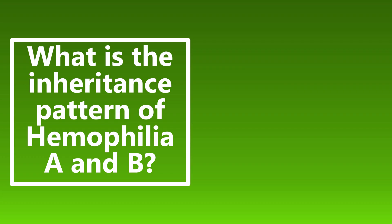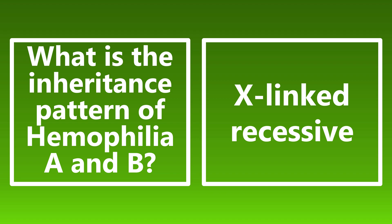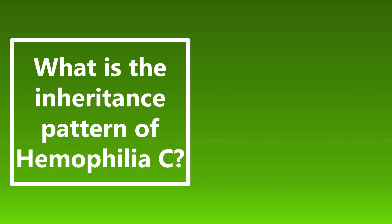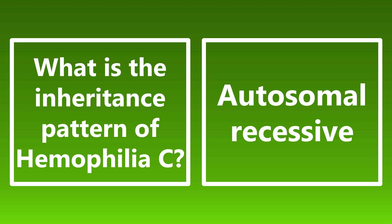What is the inheritance pattern for hemophilia A and hemophilia B? Hemophilia A and B are both X-linked recessive. Remember, hemophilia A has a deficiency of factor 8, and hemophilia B has a deficiency of factor 9. What is the inheritance pattern of hemophilia C? This one is autosomal recessive, and it is a deficiency of factor 11. Make sure you know those distinctions.